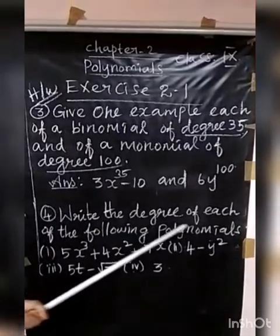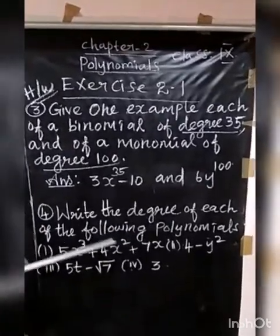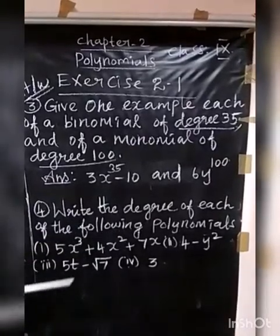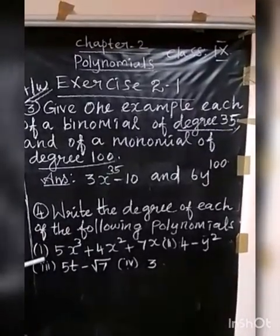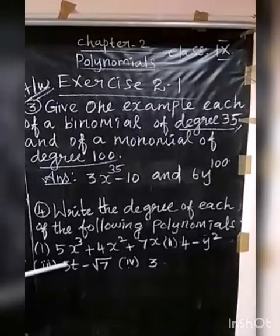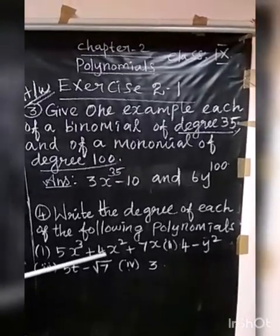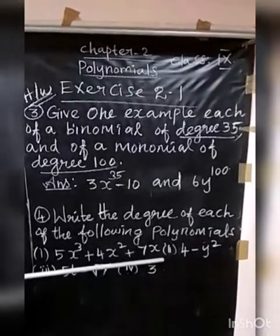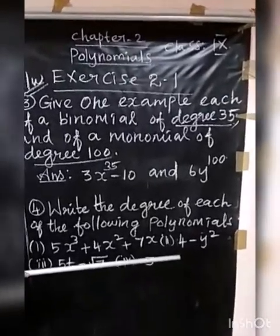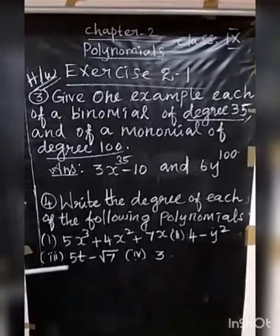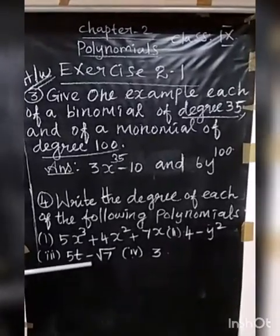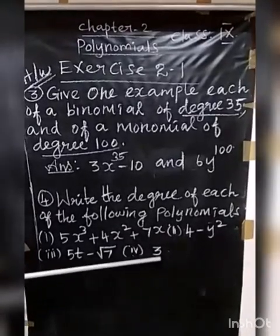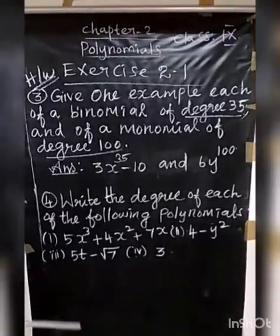Next, Exercise Question 4: Write the degree of each of the following polynomials. First: 5X Cube Plus 4X Squared Plus 7X. Second: 4 Minus Y Squared. Third: 5T Minus Root 7. Fourth: 3. The degrees are 3, 2, 1, and 0 respectively.